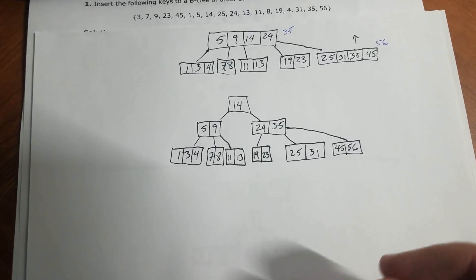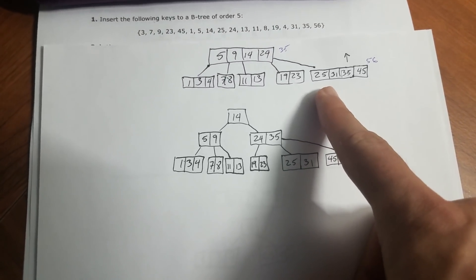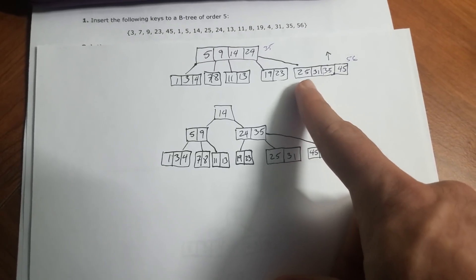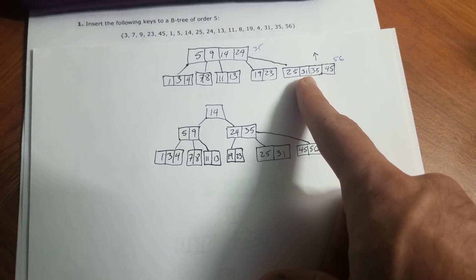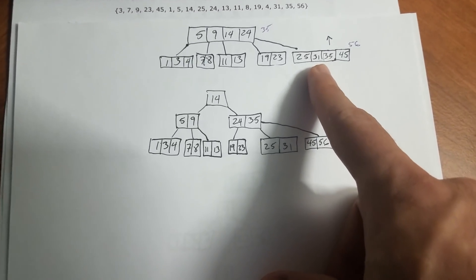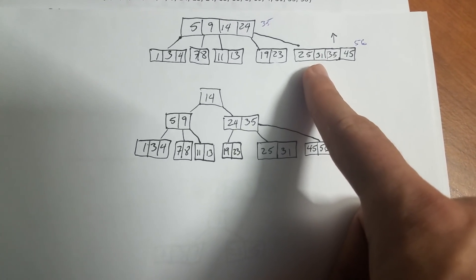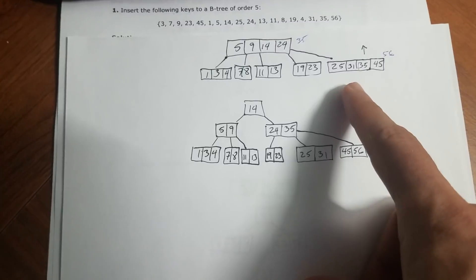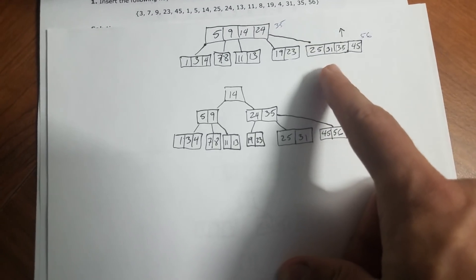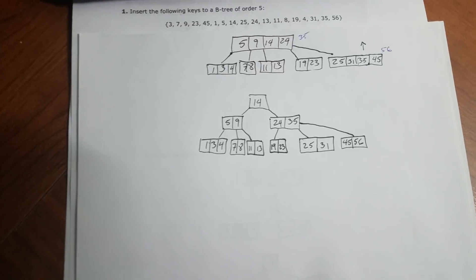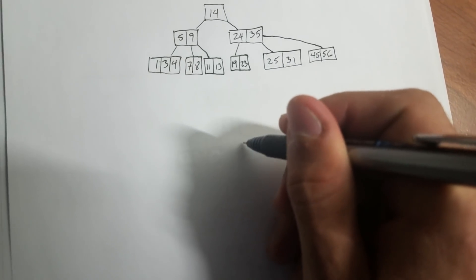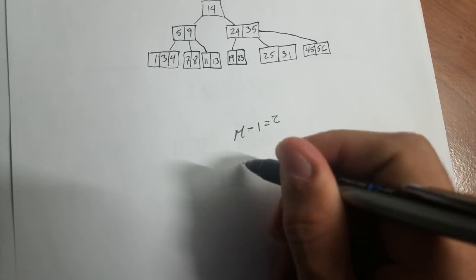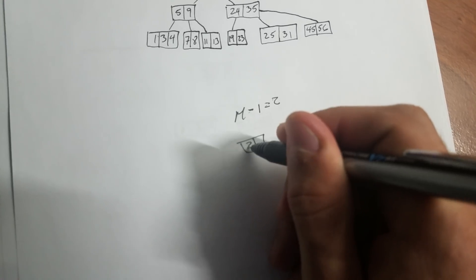The main point to remember is if you have an order of five, and you have four elements here, since it is the maximum amount of keys that you can have, then you need to promote the middle one and split in two. Let's say you have an order two or an order three, right? So an order three would be m minus 1 would be two. Therefore, you can only have two elements here.